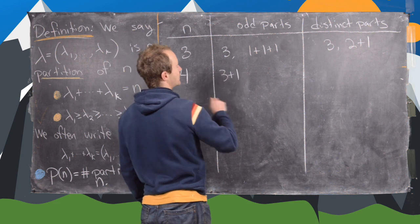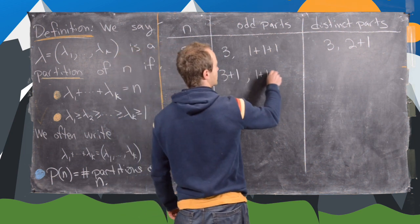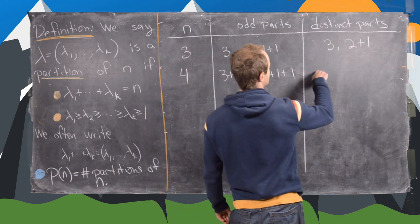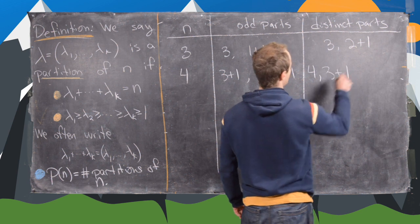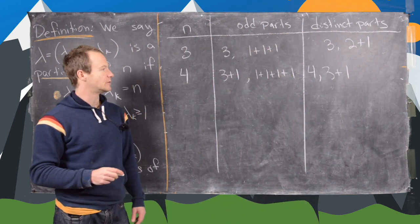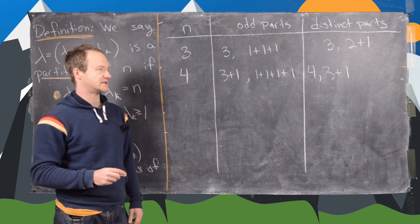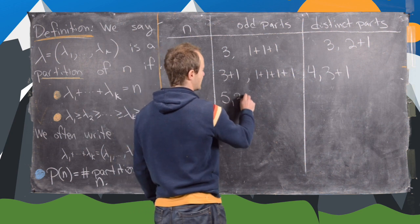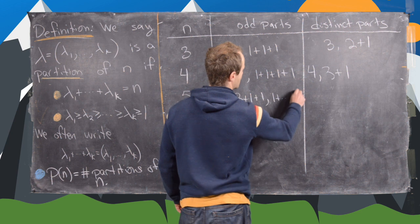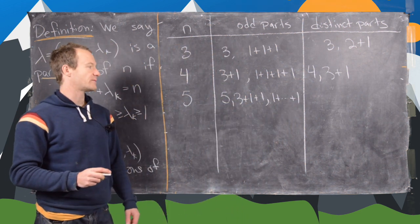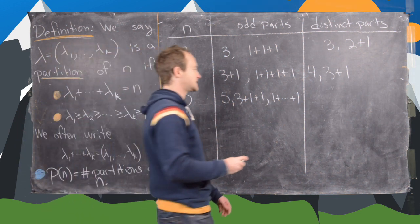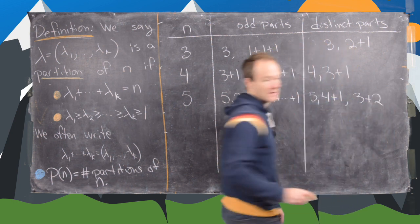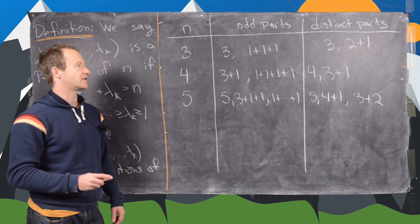For n equals 5: partitions into odd parts are 5, 3 plus 1 plus 1, and all 1s — three partitions total. Partitions into distinct parts are 5, 4 plus 1, and 3 plus 2 — also three partitions. For n equals 7: odd parts give 7, 5 plus 1 plus 1, 3 plus 3 plus 1, 3 plus 1 plus 1 plus 1 plus 1, and all 1s — five partitions. Distinct parts give 7, 6 plus 1, 5 plus 2, 4 plus 3, and 4 plus 2 plus 1 — also five partitions.